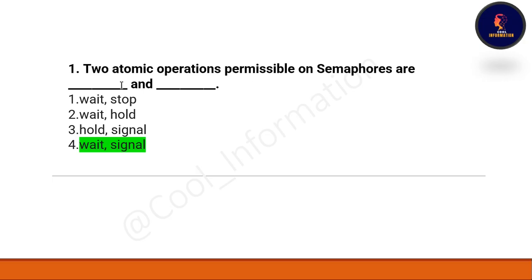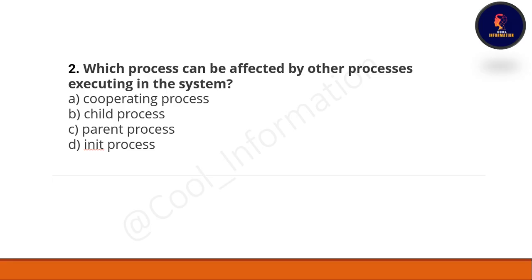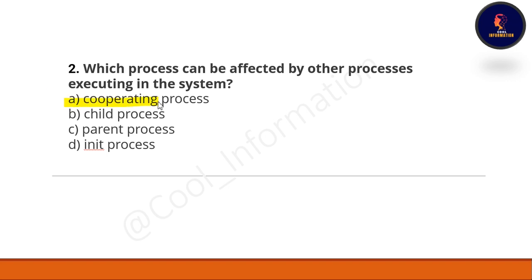Question 2: which process can be affected by other processes executing in the system? Option A: cooperating process. Option B: child process. Option C: parent process. Option D: innate process. The correct option is A — cooperating process.